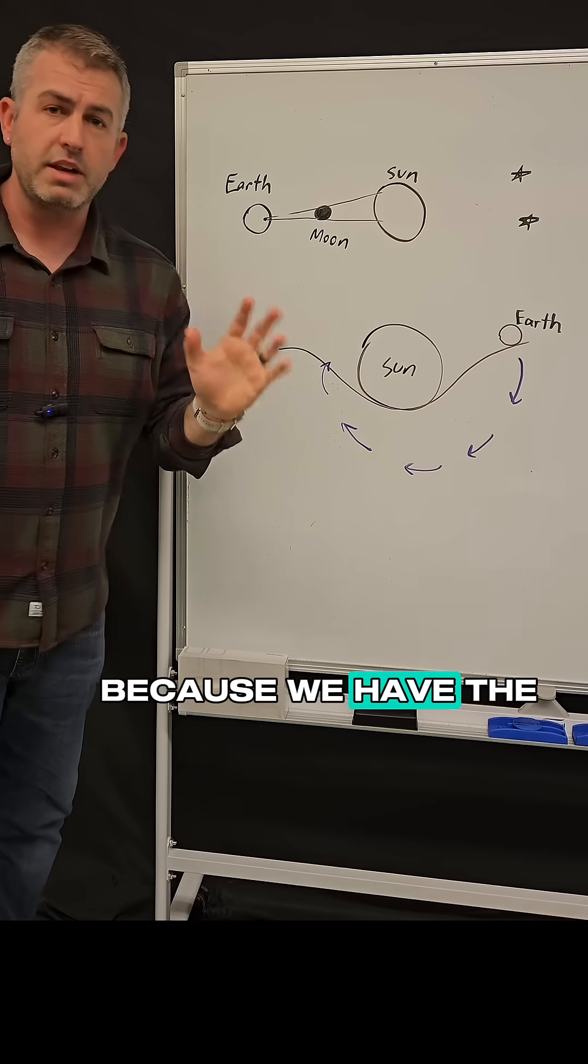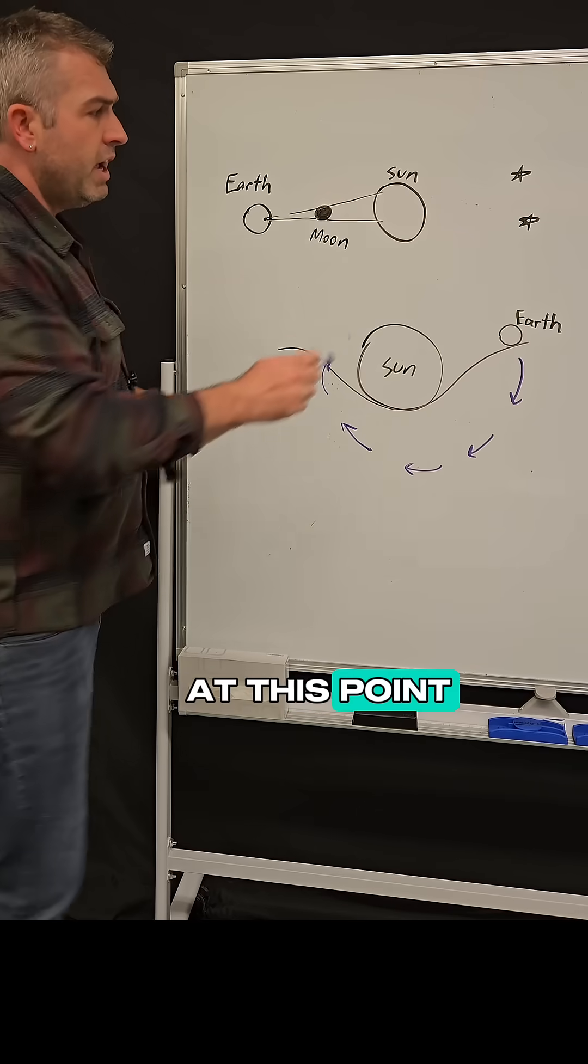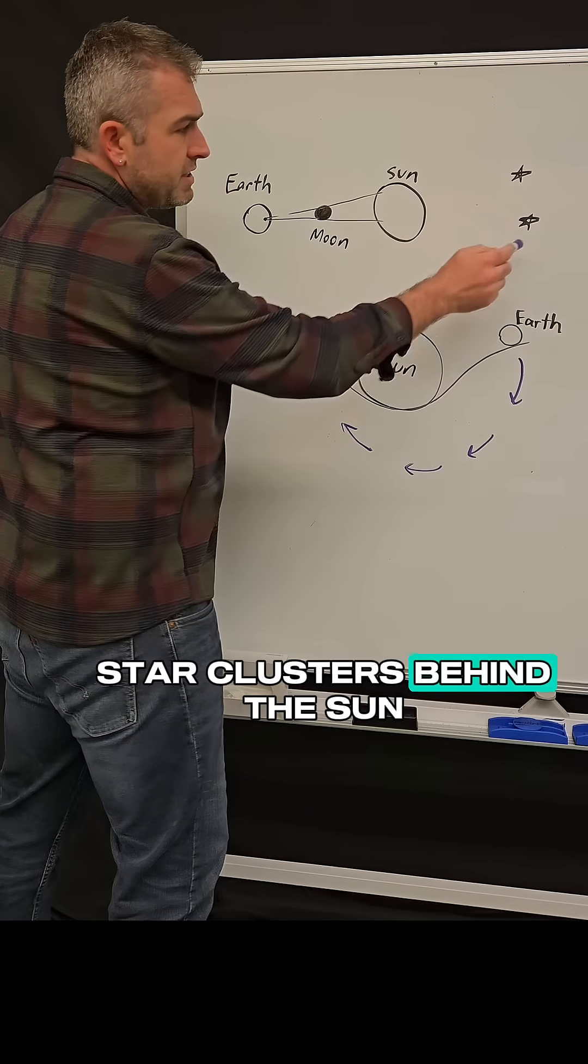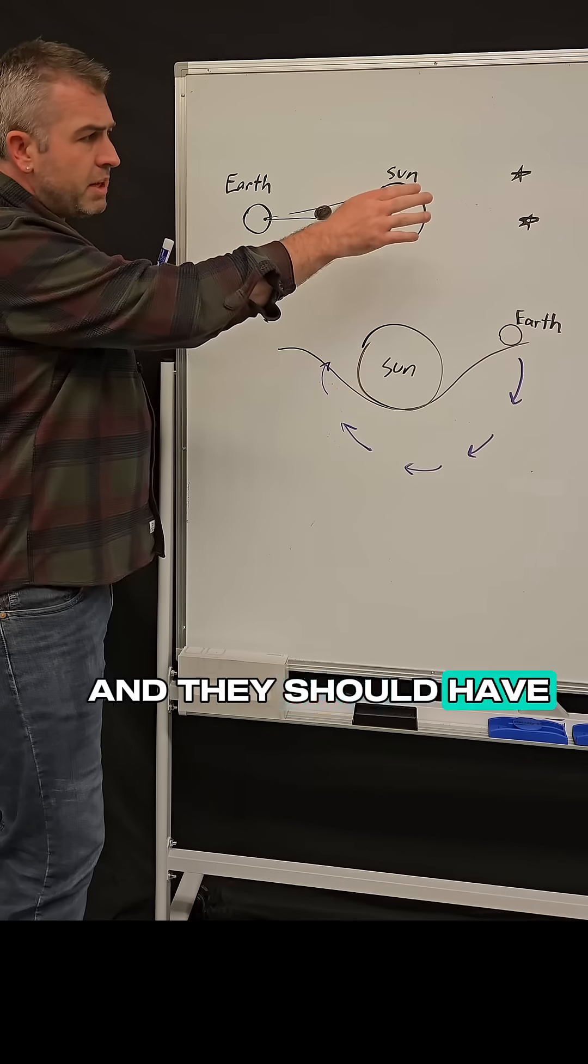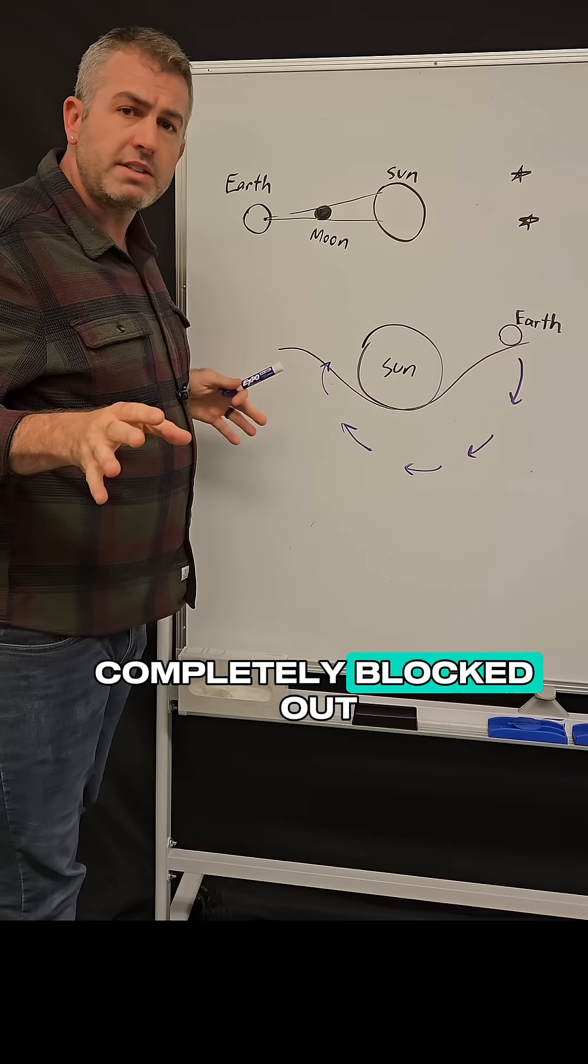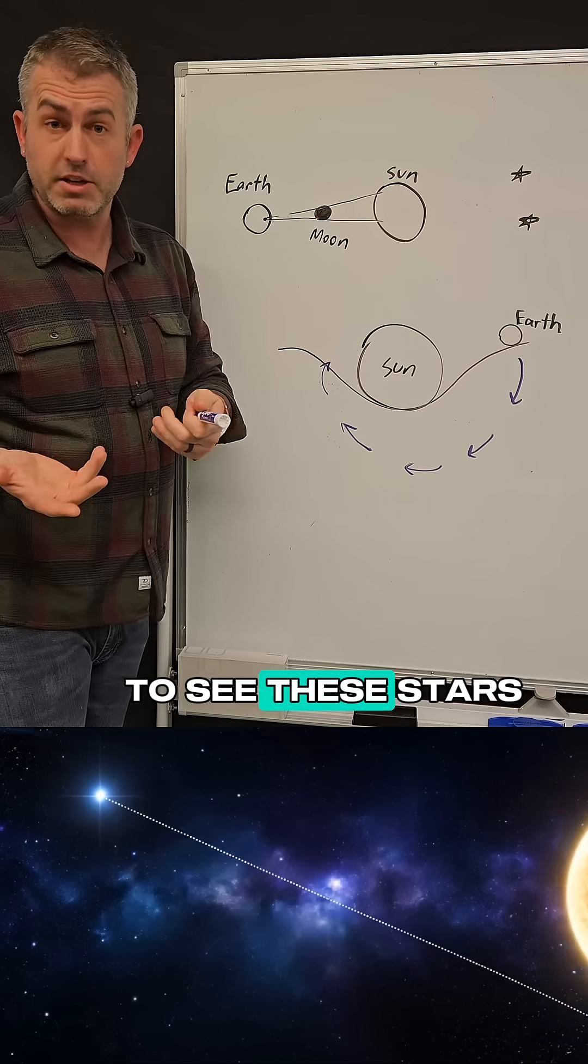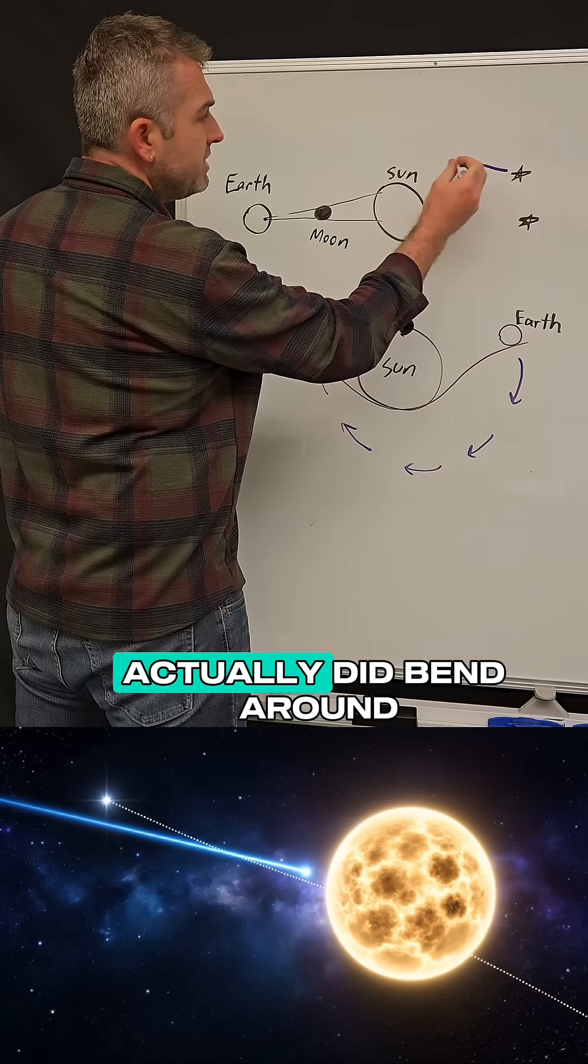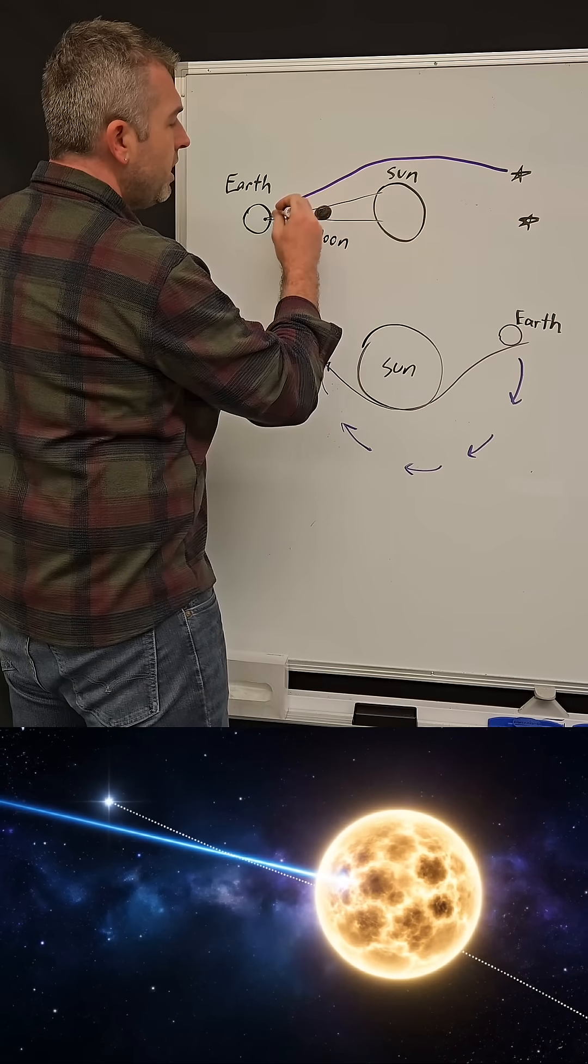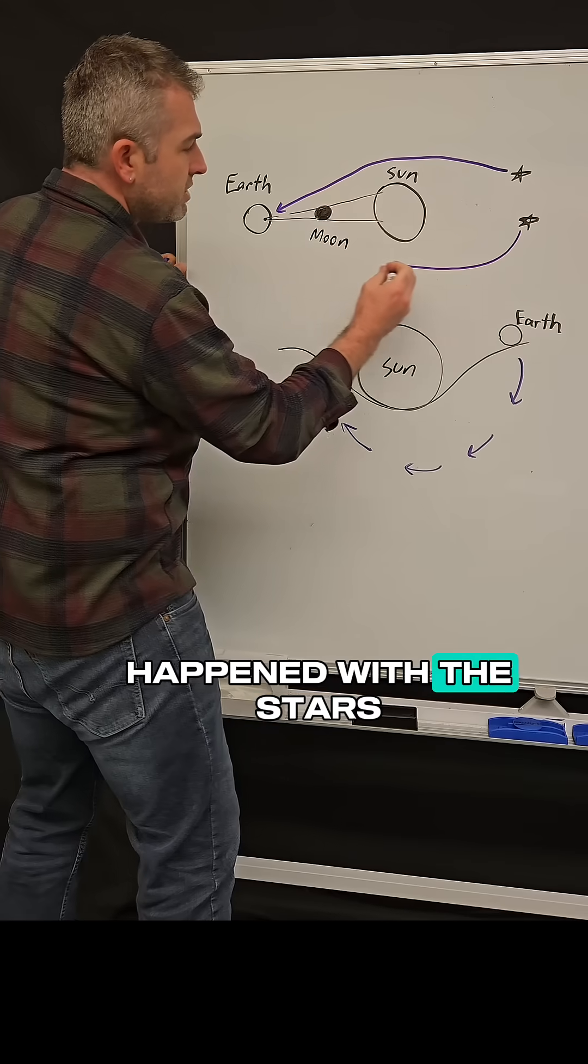And we knew, because we have the night sky very well charted at this point, that there were some star clusters behind the Sun and I'm just going to simplify and draw two stars here. And they should have been directly behind the Sun completely blocked out, so there's no way we should be able to see these stars. But what happened was the starlight from this star actually did bend around the Sun and so the same happened with the stars over here.